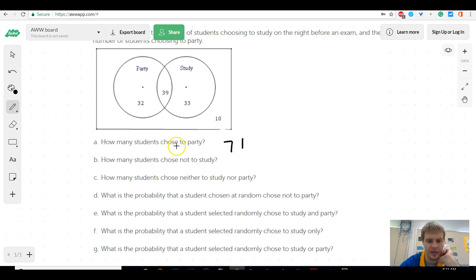How many people chose not to study? Well, that would be everyone not in this circle, so the 32 and the 10. That'd be 42. How many people chose to neither study nor party? So, we can't use anything in this circle, so it'd have to be this 10.